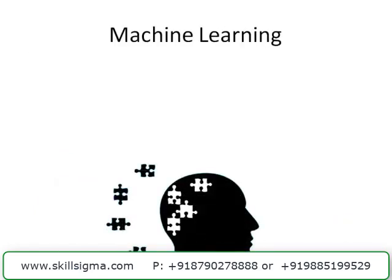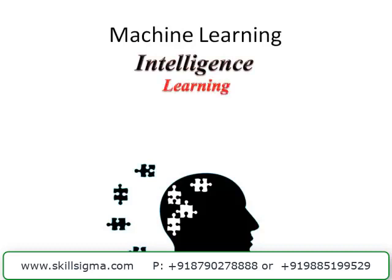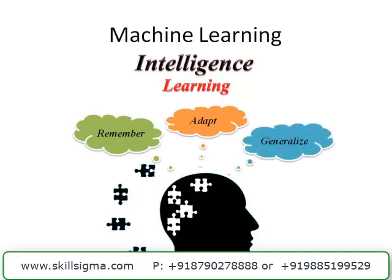Machine learning - how do machines learn? Before we teach machines to learn, we should understand how we as individuals learn. It is humans who are training machines, so how will they train? They will obviously train machines how they think. The pattern in which you approach a problem is the same way you would like your machine to do it. Human intelligence or learning is made up of three things: remembering, adapting, and generalizing.